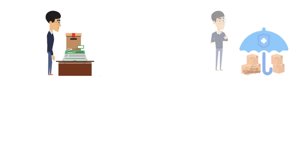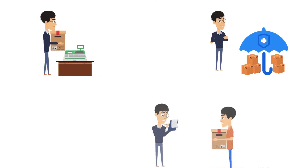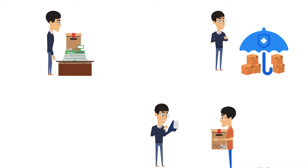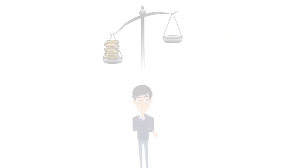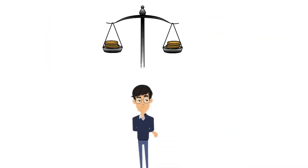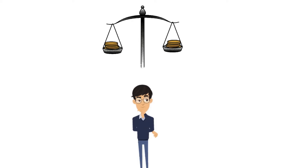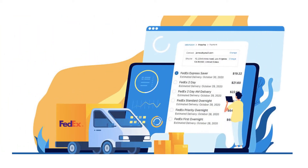A lot of other factors like product weight and dimensions, insurance, and special services like adult signature are considered in calculating the accurate shipping cost that saves you from overcharging or undercharging your customers.